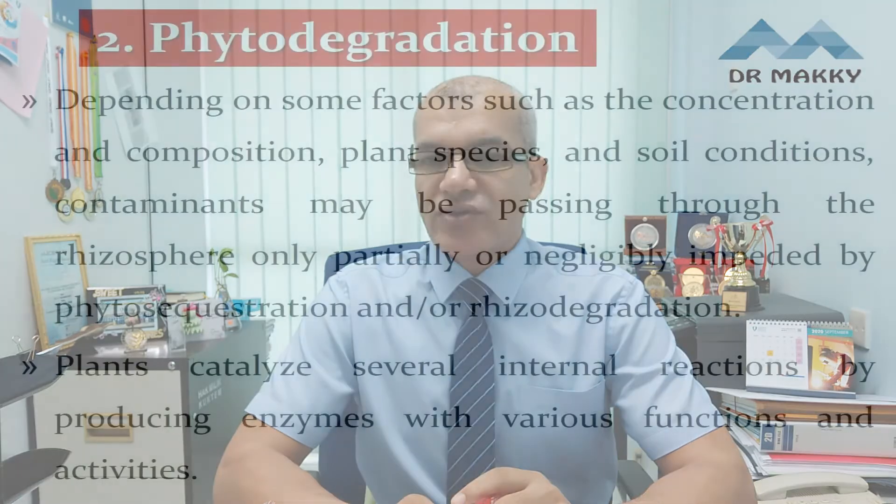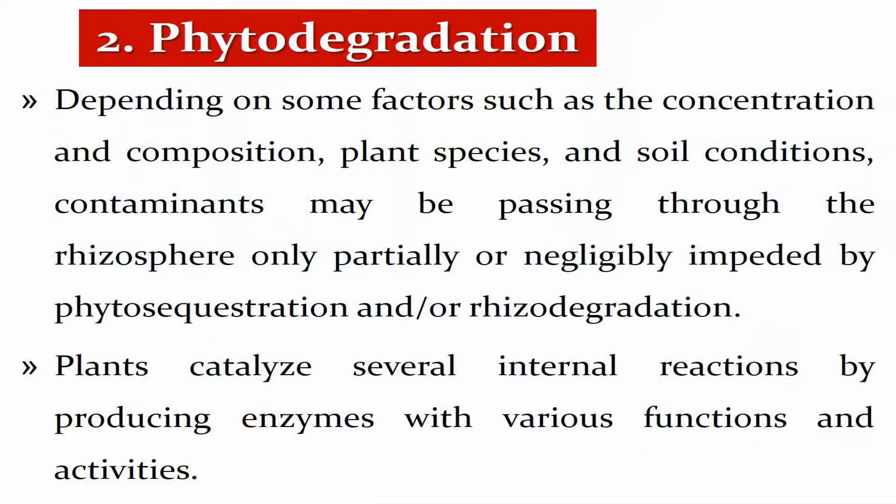The second mechanism for phytoremediation is phytodegradation, which depends on several factors such as the plant species, the concentration and composition of the contaminants, and the soil conditions. The contaminant may pass through the rhizosphere only partially or negligibly impeded by phytosequestration or rhizodegradation. In such cases, the plants catalyze several internal reactions by producing enzymes with various functions and different activities.